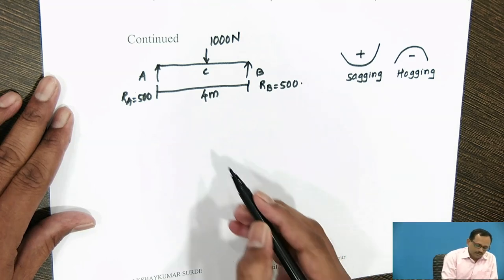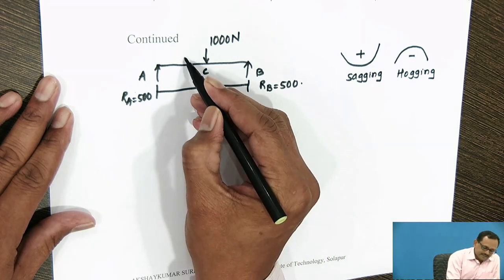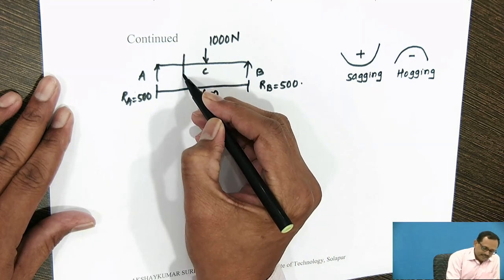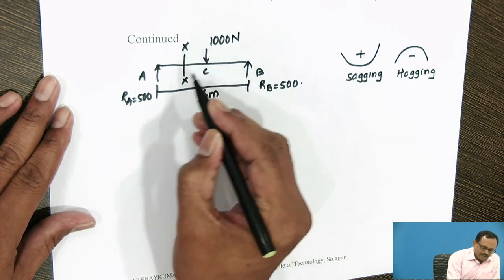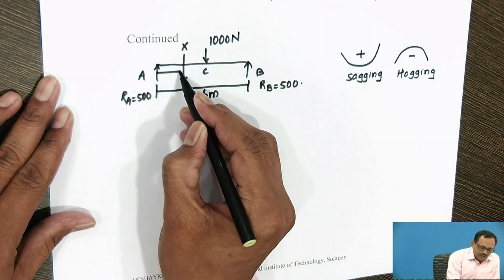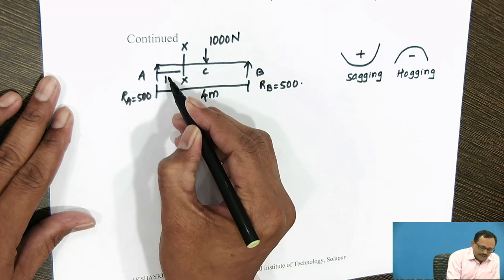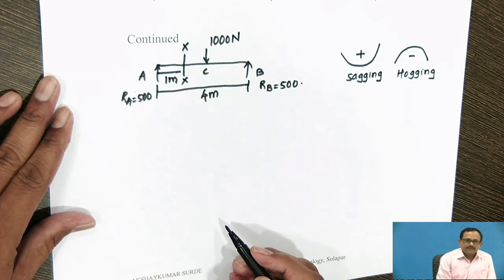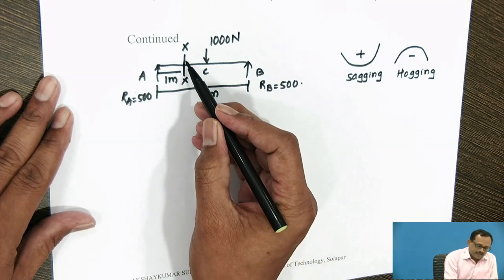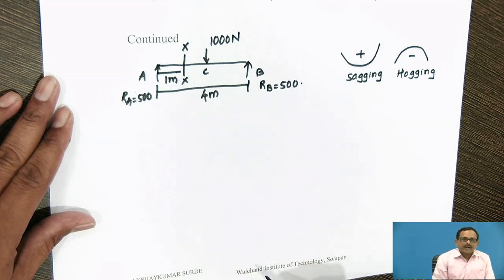Now, we will consider the section XX at a distance of 1 meter from the left end and we will determine the bending moment at section XX.